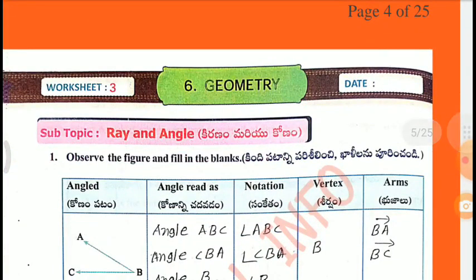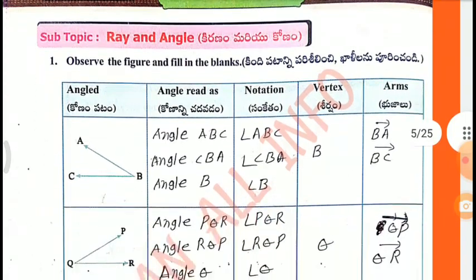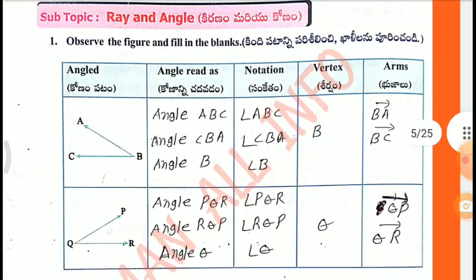Worksheet 3, Subtopic: Ray and Angle. Observe the figure and fill in the blanks. Angle read as: Angle ABC, or Angle CBA, or Angle B.